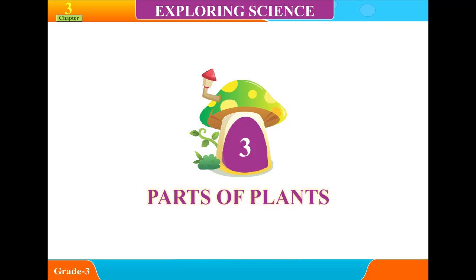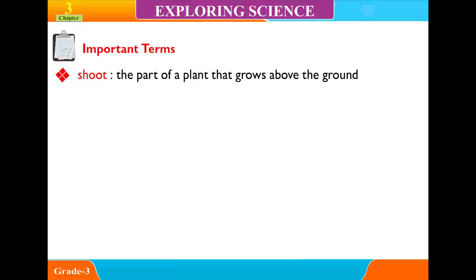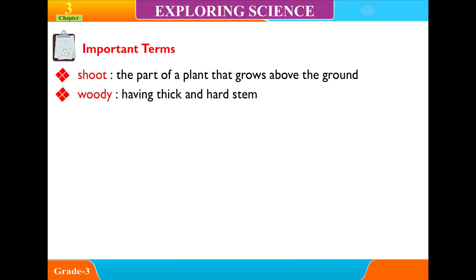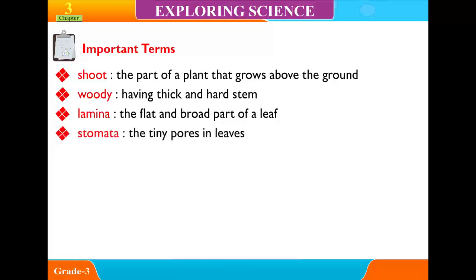Chapter 3: Parts of Plants. Important Terms: Shoot — the part of a plant that grows above the ground. Woody — having a thick and hard stem. Lamina — the flat and broad part of a leaf. Stomata — the tiny pores in leaves.